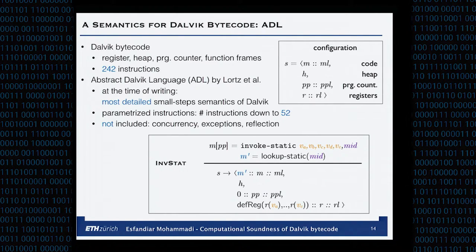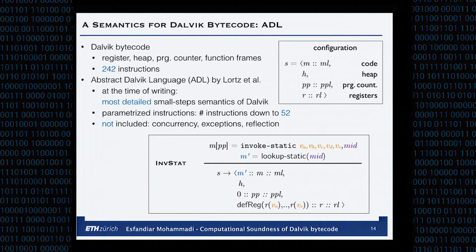To give an example of how the small-step semantics works: if the program counter points to an invoke static instruction — meaning invoke a static function — with five arguments and a method ID, you look up the method ID, look up the code with that method ID, and use the code M in the new function frame. You leave the heap H untouched, build the program counter in the new function frame at zero, and the registers inherit the values of the parameters.